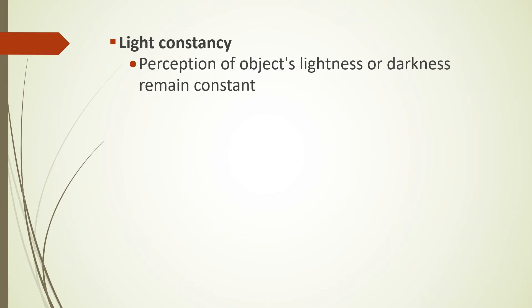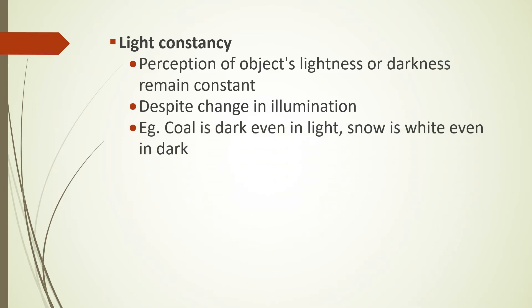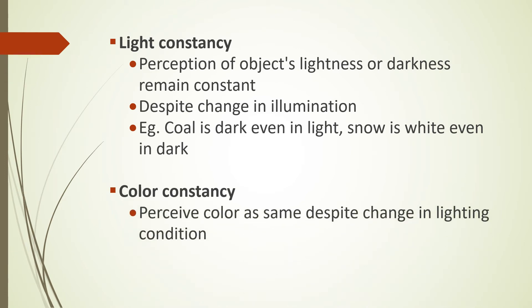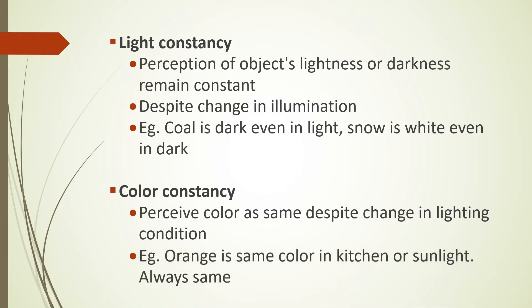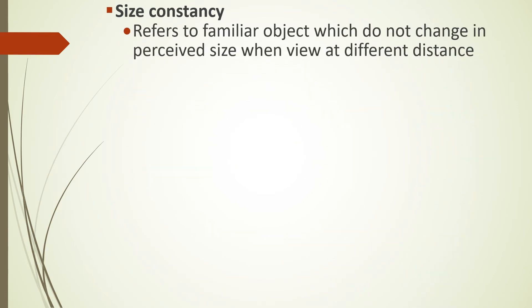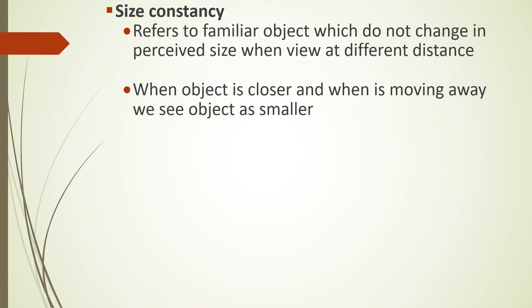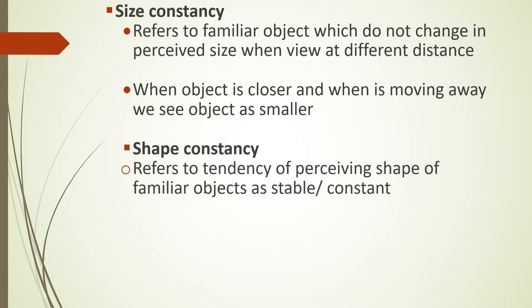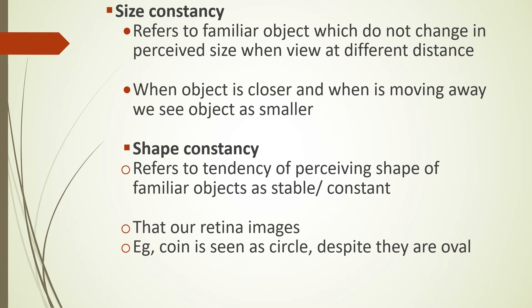Light constancy means the perception of an object's lightness or darkness remains constant despite changing illumination — for example, coal is dark even in the light, and snow is white even in the dark. Color constancy means color is perceived as the same despite changes in lighting conditions — for example, an orange is the same color whether in the kitchen or sunlight. Size constancy means familiar objects do not change in perceived size when viewed at different distances — as an object moves away, we see it as smaller.